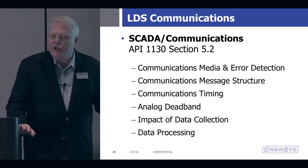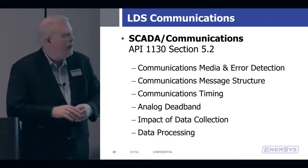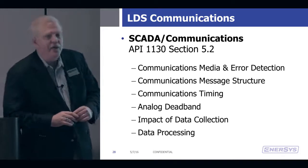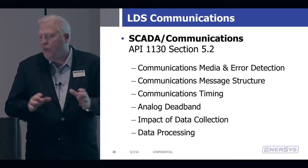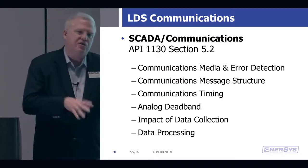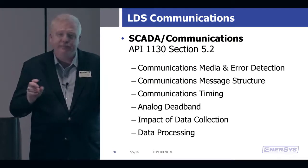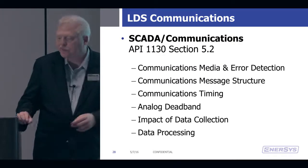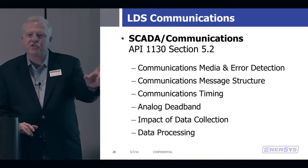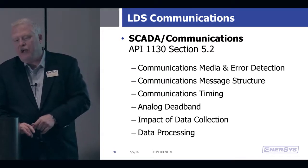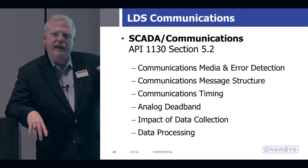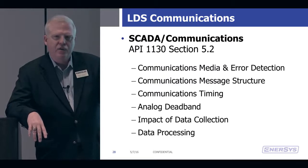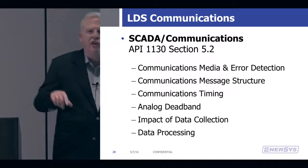The other part in API 1130 is section 5.2, which gets into a whole bunch of requirements about how the communications infrastructure actually works: what media are you using — serial, Ethernet — how does it do error detection, and what is the message structure. A lot of people are moving to Ethernet radios, which means they've got an IP packet on top of a serial packet. For the same bandwidth, you can physically move less data because there's more overhead in the messaging.